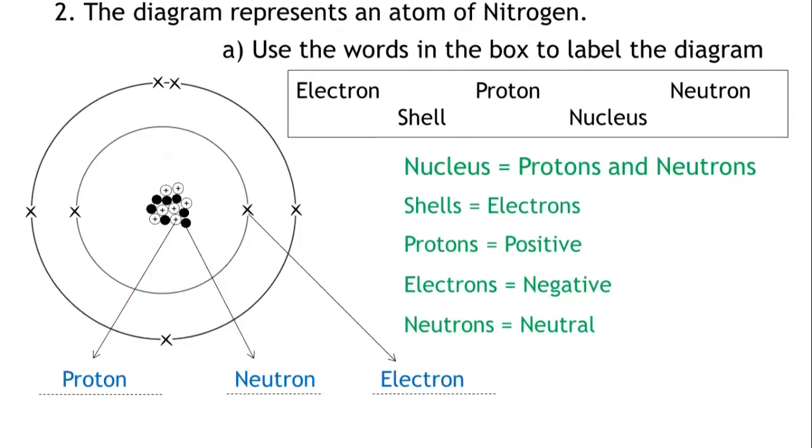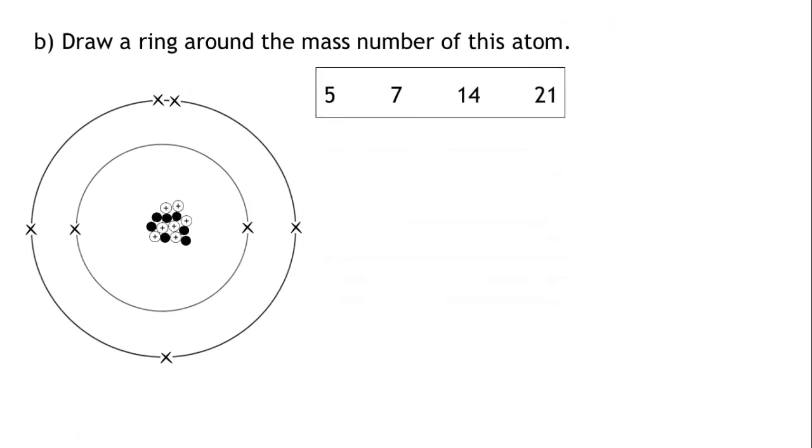Part B: Draw a ring around the mass number of this atom. Let's write down what we know about the mass number. The mass number is equal to the number of protons plus the number of neutrons.